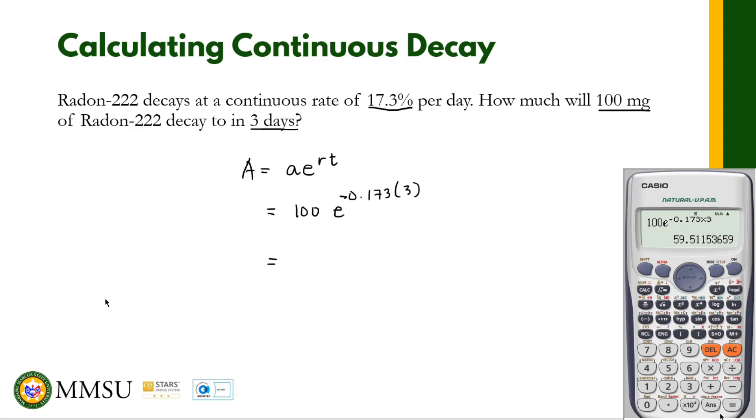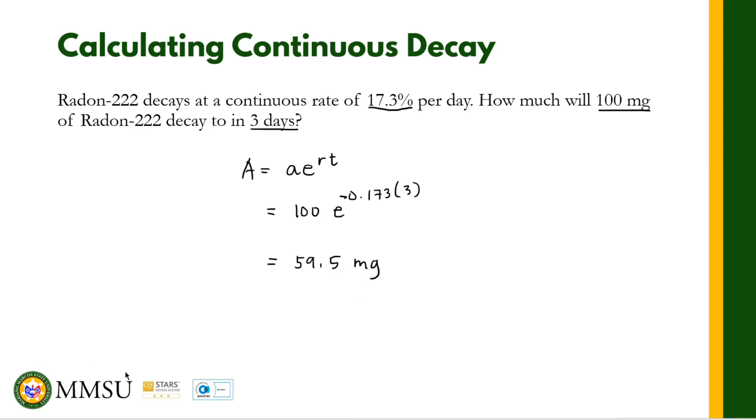Therefore this is equal to 59.5 mg. So that's how we solve continuous growth and continuous decay. Thank you for watching.